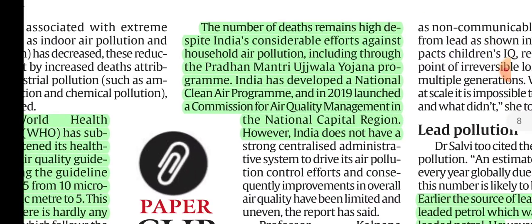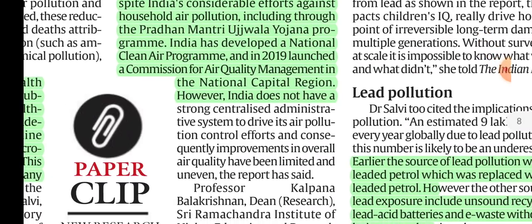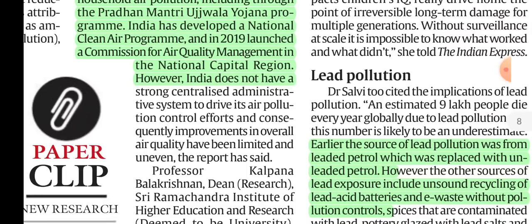According to the report, air pollution is most severe in the Indo-Gangetic Plain. The reasons for pollution include burning of biomass, coal combustion, and crop burning. Household air pollution is also significant, as seen under the Pradhan Mantri Ujjwala Yojana programme. India has developed a National Clean Air Programme and launched a Commission for Air Quality Management in the National Capital Region after 2019, but pollution has not been controlled due to no political will and no centralized administration.